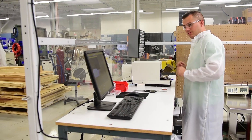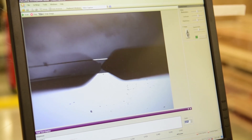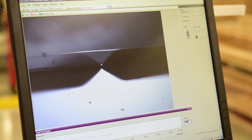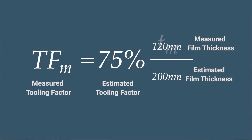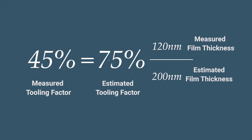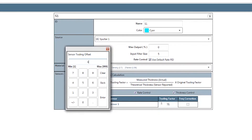I have loaded a sample onto the profilometer stage and we are ready to measure our thickness. Based on our profilometer measurements, we've deposited a film of 120 nanometers. Our original tooling factor was set at 75%, which means our initial guess was slightly off — but that's why we're performing this process. Plugging in our target thickness, estimated tooling factor, and measured thickness into our formula, we get a new tooling factor of 45%. We can now enter this new tooling factor in our deposition software and proceed with our depositions.